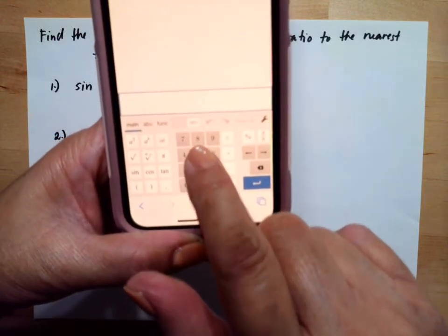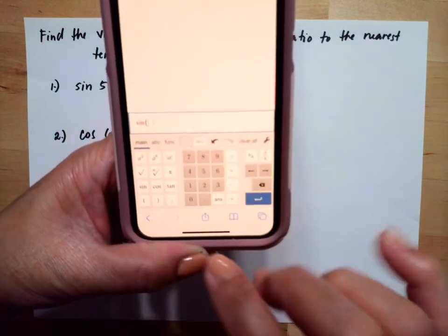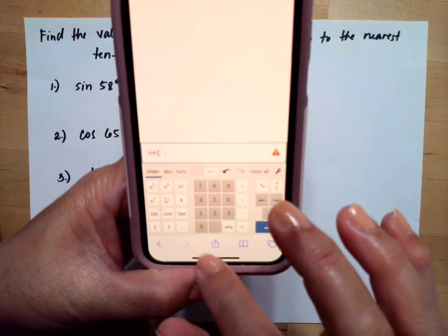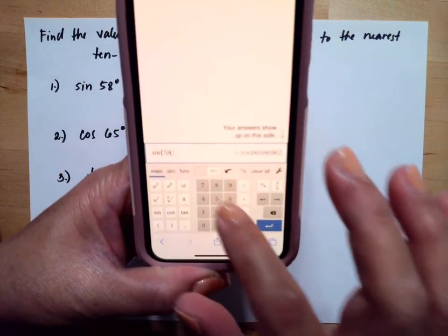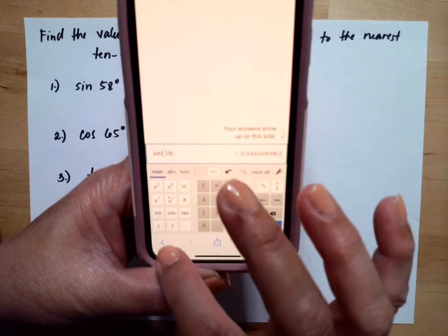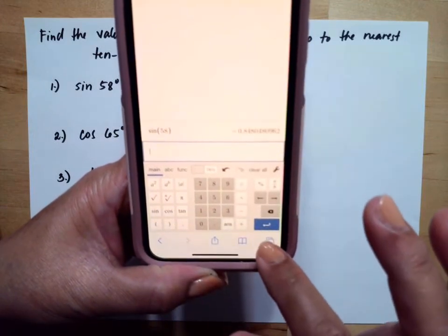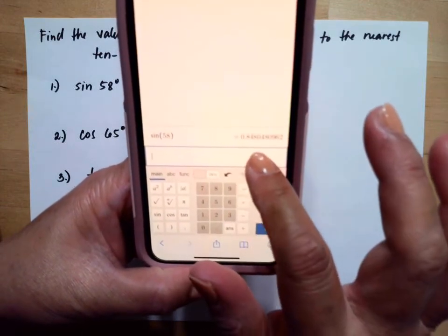Then you will just say sine, then you will enter your 58 degrees, and you get the equivalent value which is 0.8480.